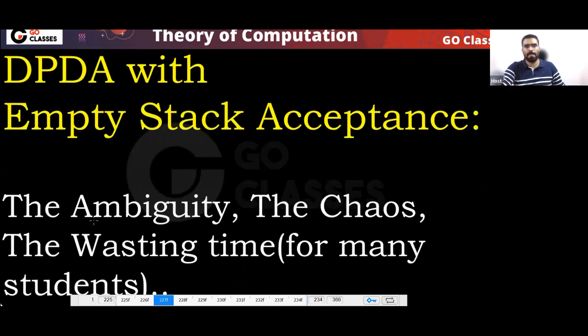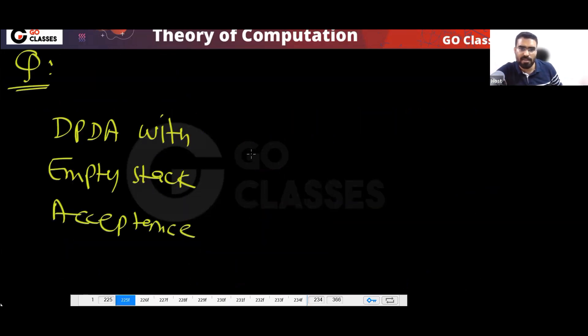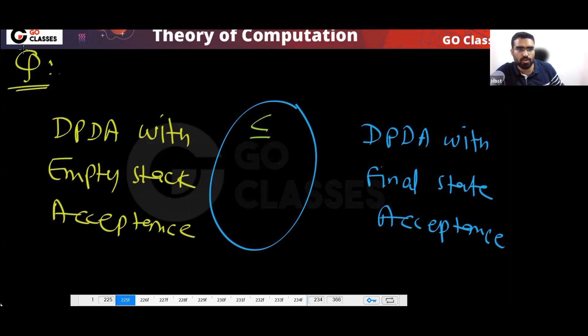Now something interesting — have you seen this type of question? Who has more power: DPDA with empty stack acceptance? Does it have more power, less power, or what, comparing to DPDA with final state acceptance? Anyone from your previous knowledge must have seen this. What is your opinion — should it be less than, greater than, or equal?